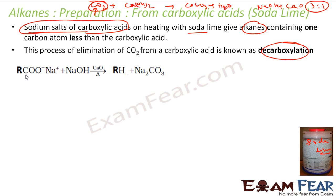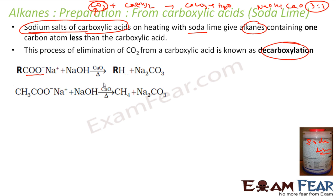So the reaction: R-COONa with NaOH gives R-H, and you get Na2CO3. One more reaction — instead of R, I am taking a methyl group. This is CH3COONa. You react it with NaOH and CaO, you get methane and sodium carbonate.